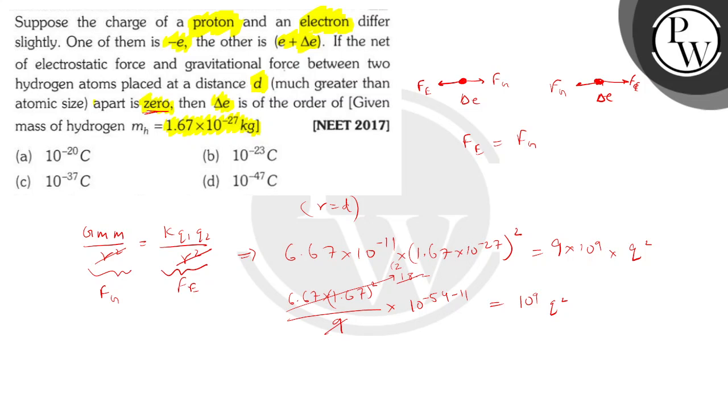So, now we have 10^(-54-11). And then when we take this to the other side, this will be -9. So, this becomes 10^-74.